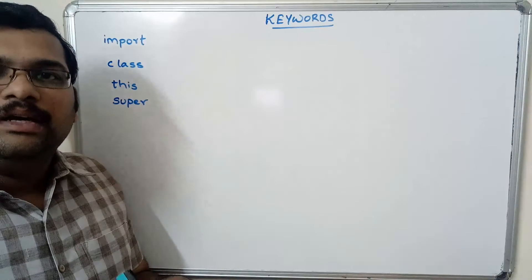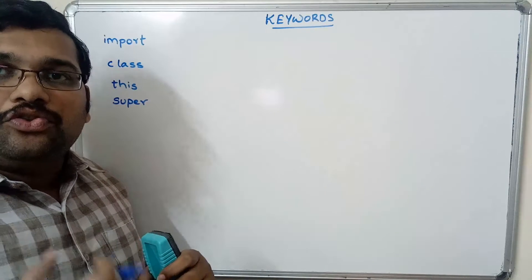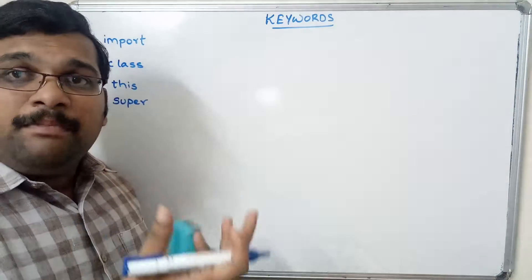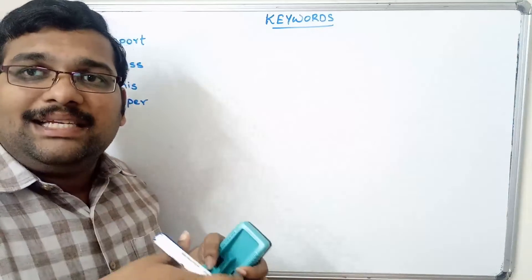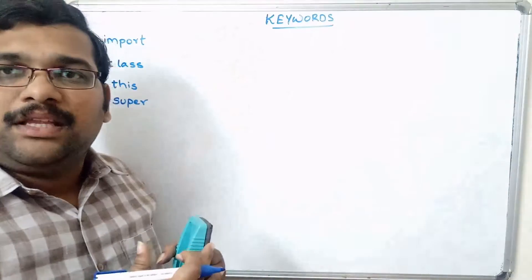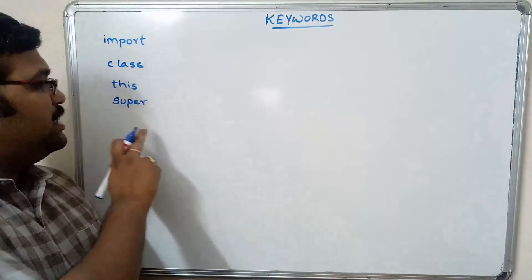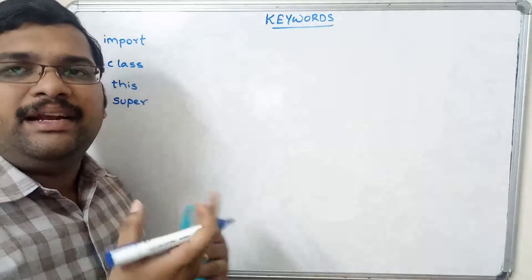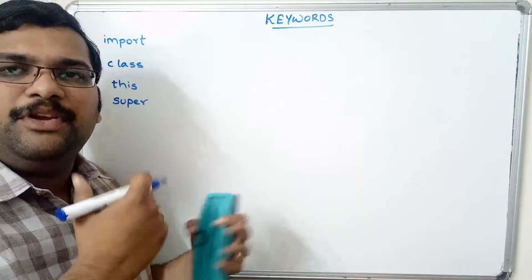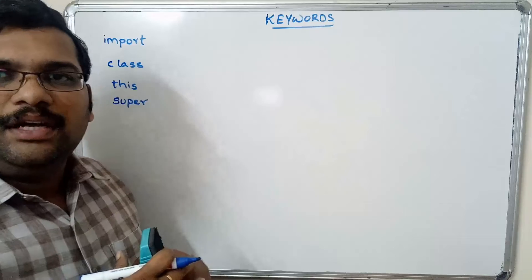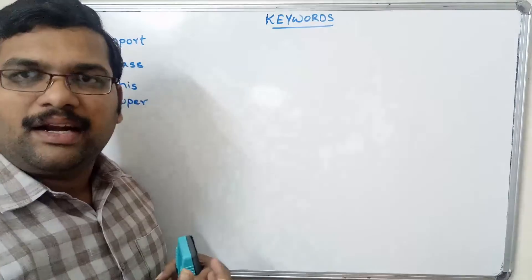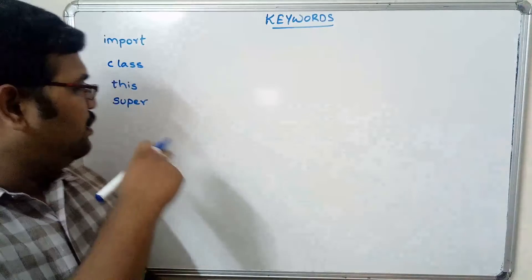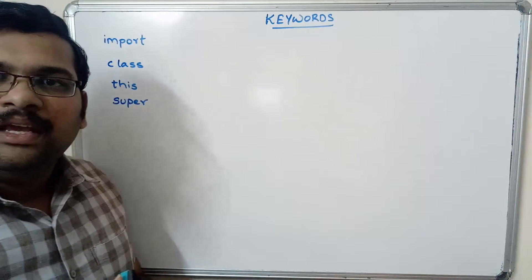The super keyword is used to access methods of a superclass from a subclass. If one method of a subclass is accessing another method of a superclass, we use this super keyword. Simply put, it is used in the inheritance concept — when one class is derived from another class and a method is invoked from another class.